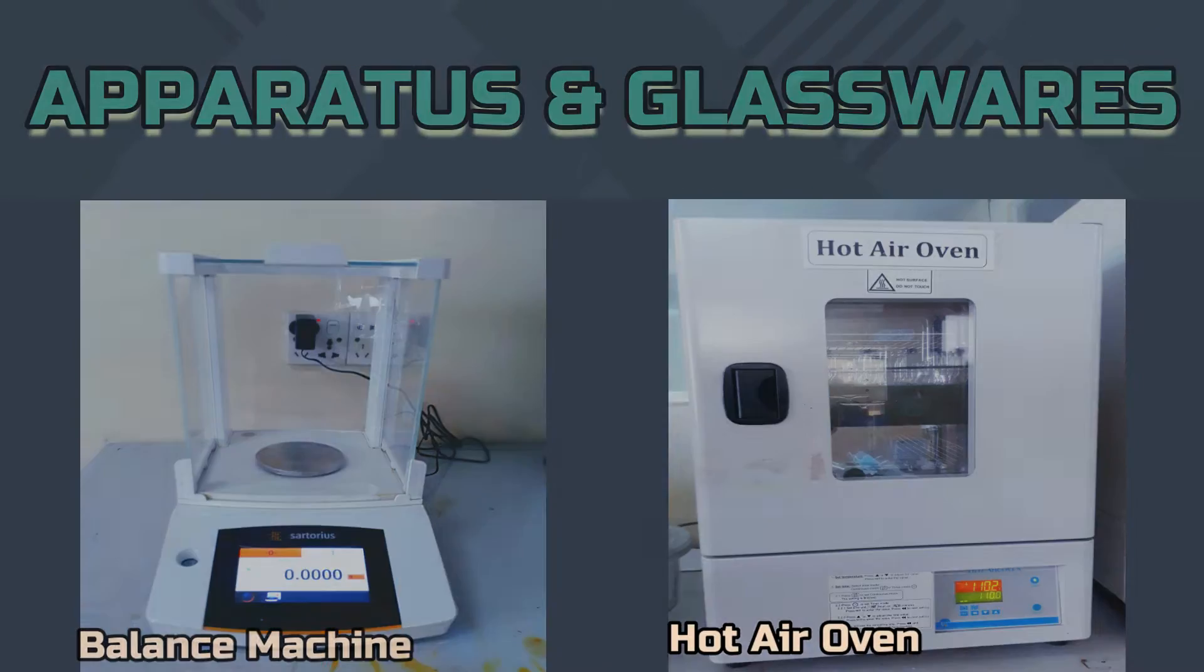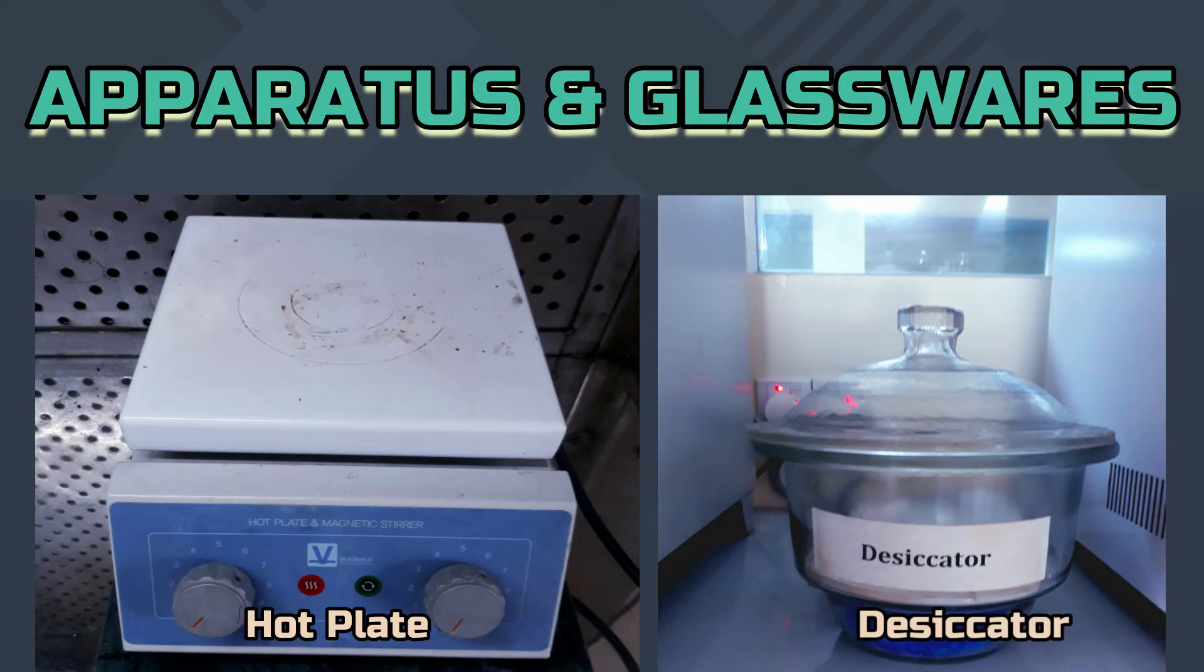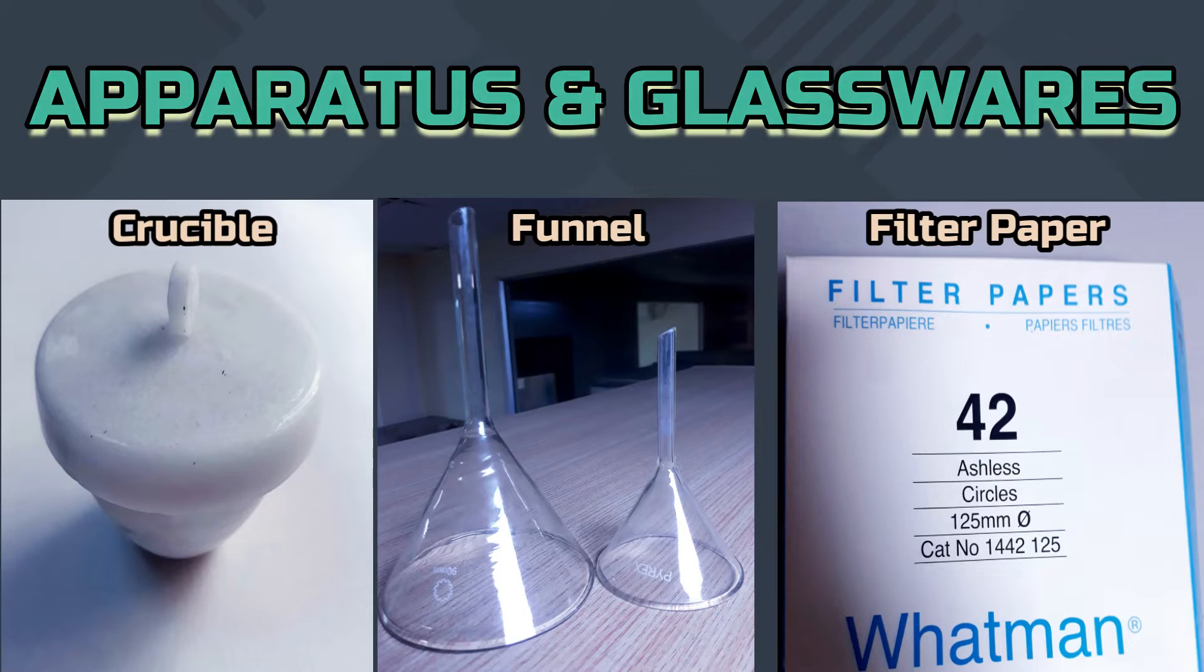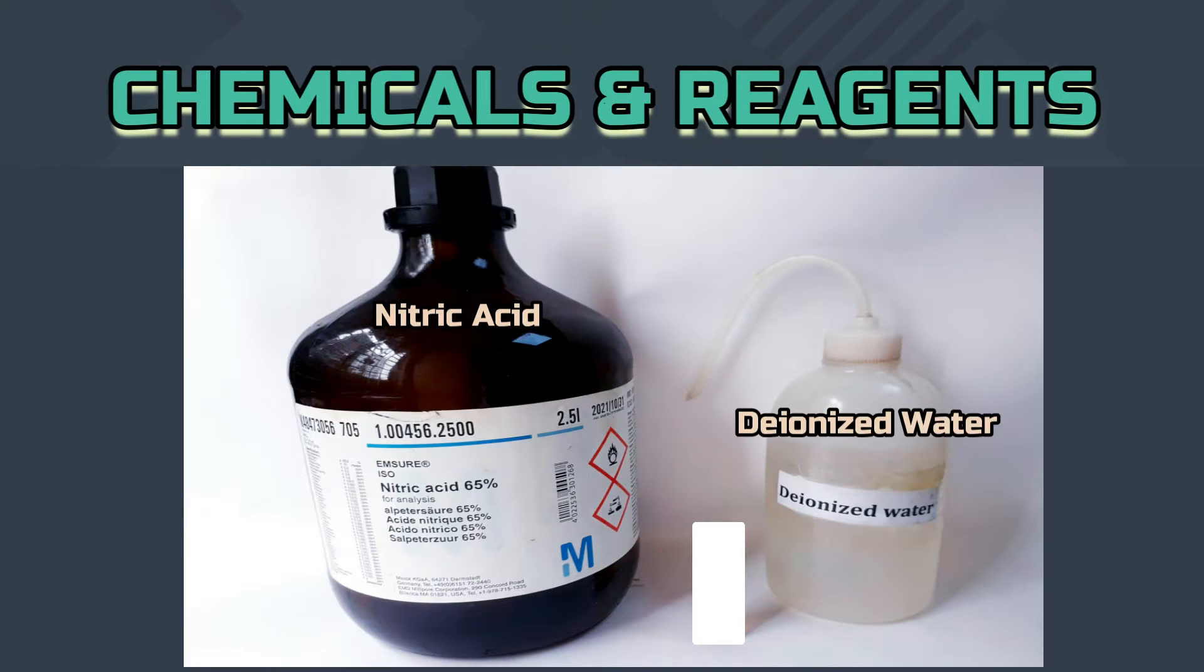To prepare a sample, we need a balance machine, hot air oven, hot plate, desiccator, muffle furnace, volumetric flask, crucible, funnel, filter paper, nitric acid and deionized water.